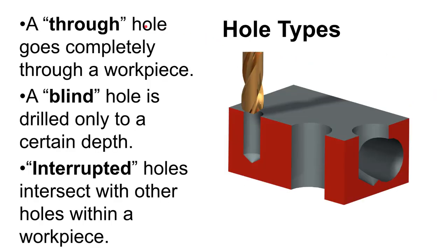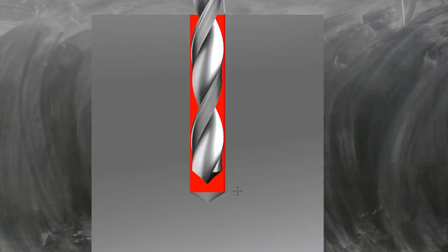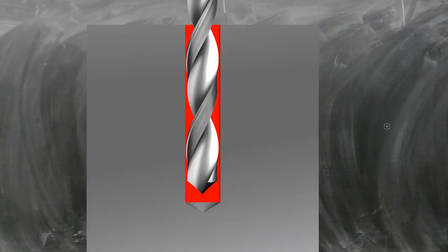You should be familiar with three types of holes. A through hole obviously goes through the material. A blind hole goes partially through the material and has a depth. When talking about the depth of a hole, that depth refers to the cylindrical part only — it does not include the tip angle at the bottom. So a hole referenced as half an inch deep means the depth of the cylindrical portion, not including the tip.